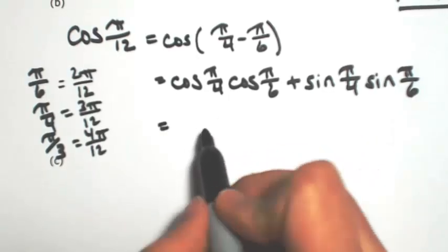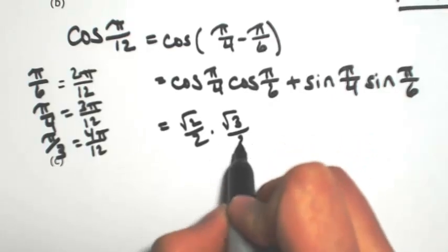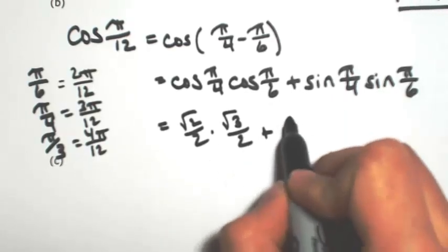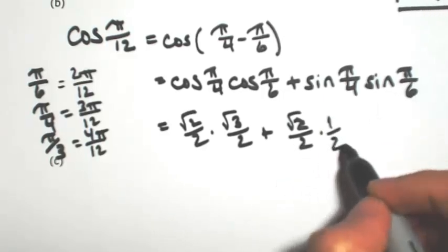And then just evaluating each one. Cosine of pi over 4 is square root of 2 over 2. And then square root of 3 over 2. Sine of pi over 4 is also square root of 2 over 2. Sine of pi over 6 is 1 half.